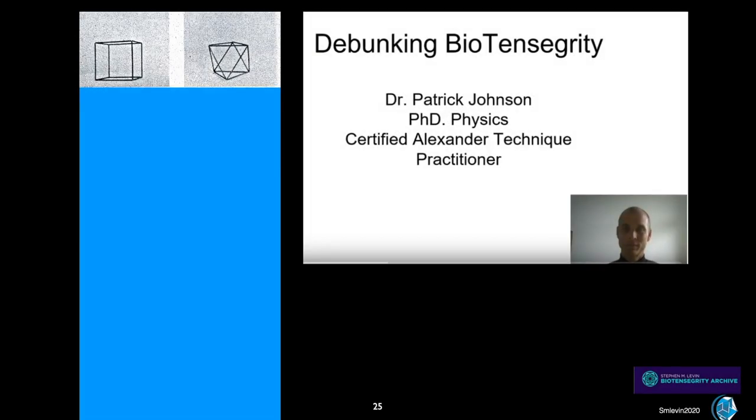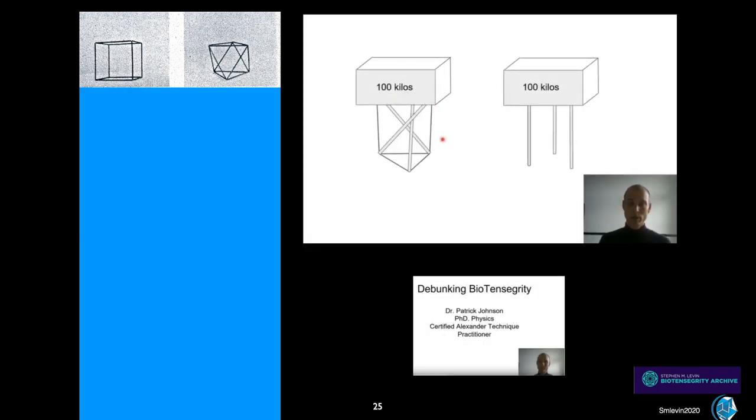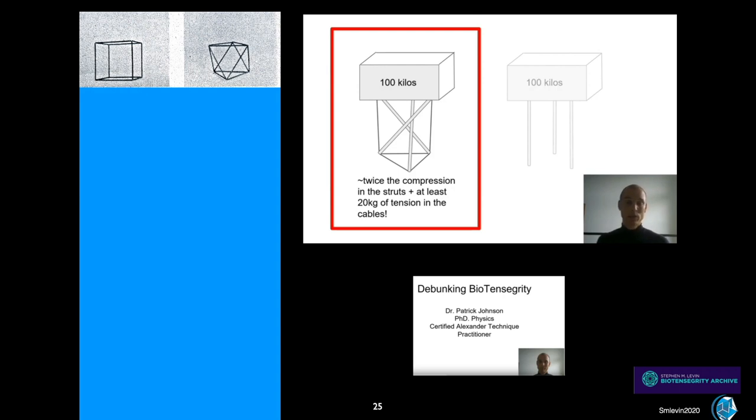Here we have an example of that by Dr. Patrick Johnson, a PhD physicist and Alexander Technique practitioner. It is an excerpt from his YouTube presentation, which is presently available, and I will let him tell his own story. Let's take a hundred kilos and put one block on a tensegrity structure and another block just on three rods. The question is, which one has more pressure along the line of the rods? And I'll give you a few seconds to think about this and come up with an answer. You can pause the video if you want. The answer is this one. It has more compression along the rods. In fact, if you do the calculation, you find that easily for this kind of angle, the pressure can be as much as twice as much or more.